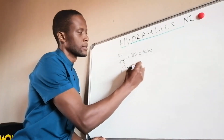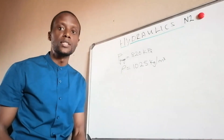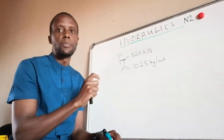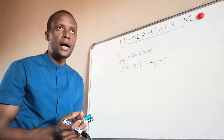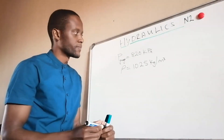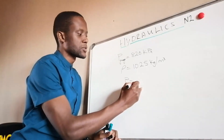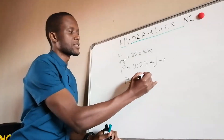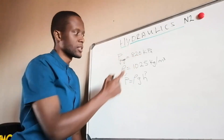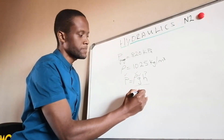The first question asks us to calculate the depth. If the density of the liquid is not given in the question, check the information page of your exam. Pressure at a depth is equal to density times gravity times height. What they're asking for is the height or depth. We have gauge pressure 820 kilopascal, density 1025, and acceleration due to gravity, so we can manipulate the formula.